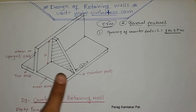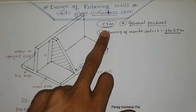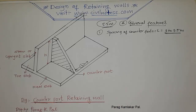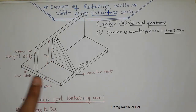The counterfort retaining wall is used when the height is more than 5.5 meters. The components of a counterfort retaining wall consist of: the counterfort itself, the stem or upright slab, the toe slab, and the heel slab.